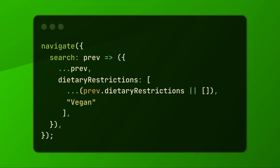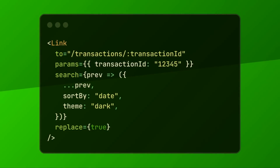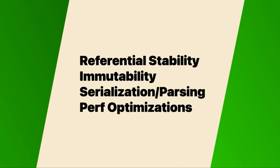What's really awesome and important is that you can update literally everything about the URL in a single transaction for a nice clean history stack. You get a lot of very complex, difficult problems solved for you out of the box — like referential stability between renders and updates, immutability, serialization and parsing, and just tons of performance optimizations.